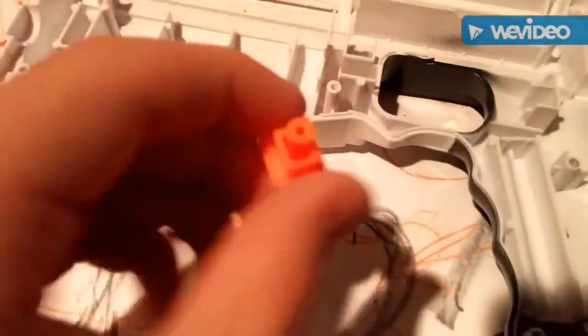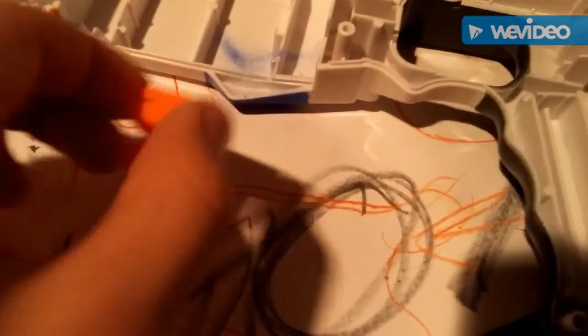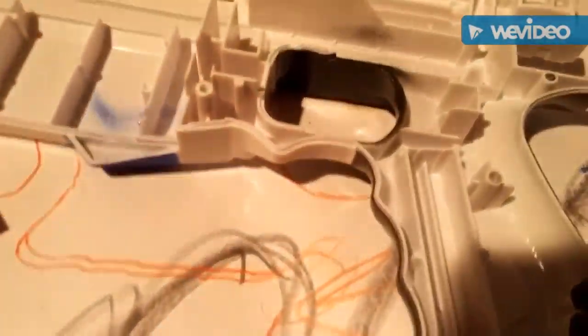You unscrew this piece which is directly screwed into this piece on the other side. Once you screw this piece out, this piece will fall out. I assume it's the same for over here.